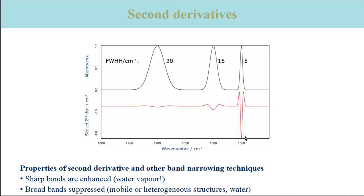This has advantages and disadvantages. First, the sharp bands of noise and water vapor are enhanced in the second derivative spectrum — therefore it is very important to start with spectra of good quality. Second, broad bands from mobile or heterogeneous structures are less obvious in the second derivative spectrum. And third, the strong absorption of water in the amide-1 range is also suppressed, so small errors in the subtraction of the water absorption do not show in the second derivative spectrum.